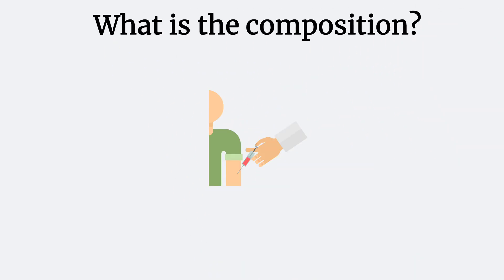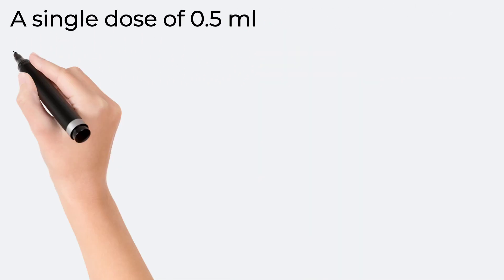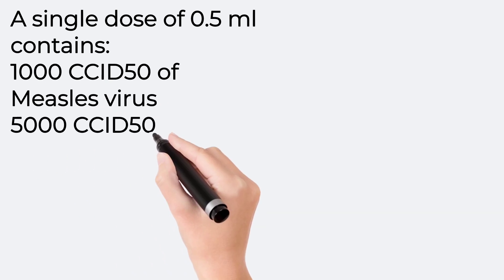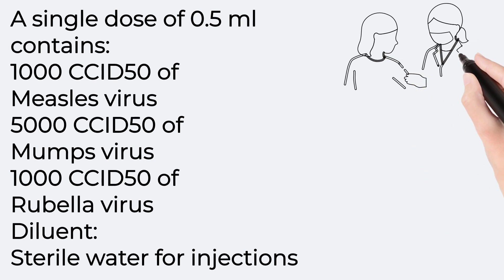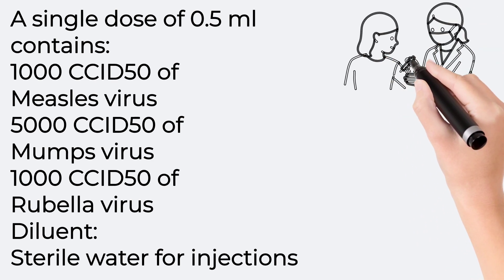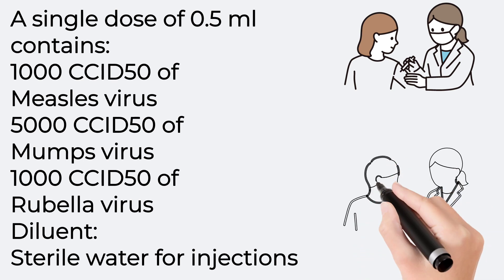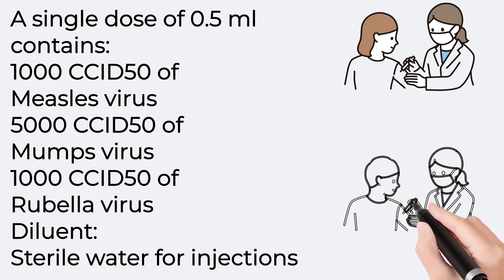What is the composition? A single dose of 0.5 ml contains 1,000 CCID50 of measles virus, 5,000 CCID50 of mumps virus, 1,000 CCID50 of rubella virus, albumin, and sterile water for injections.